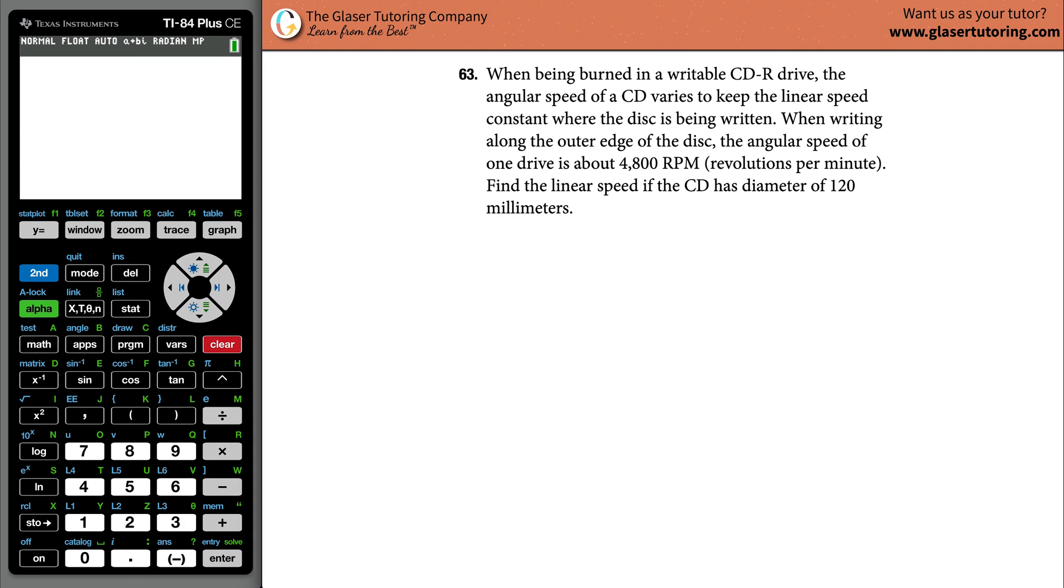Number 63: When being burned in a writable CD-R drive, the angular speed of a CD varies to keep the linear speed constant where the disc is being written. When writing along the outer edge of the disc, the angular speed of one drive is about 4,800 revolutions per minute.